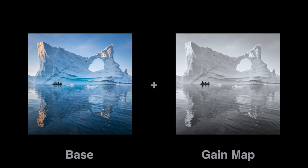So as Paul was explaining, the central idea here is to have a base rendition of an image and a gain map stored in the file. The base rendition is the primary or main image, and the gain map is a secondary image along with some metadata. You can also think of the gain map as an optional tag that goes into the header of the file along with the base.